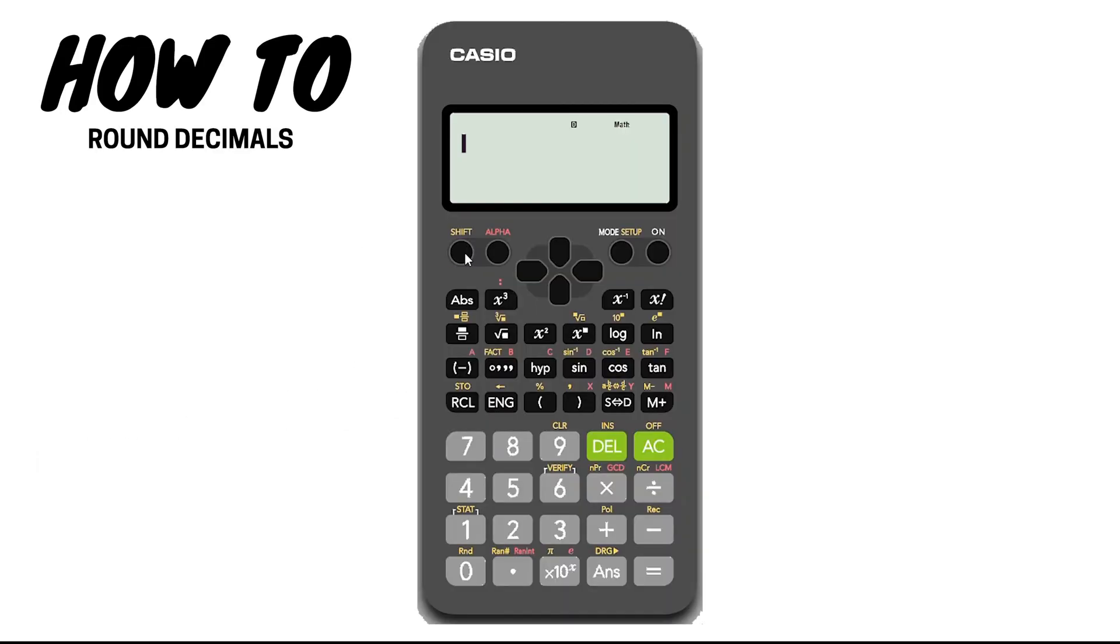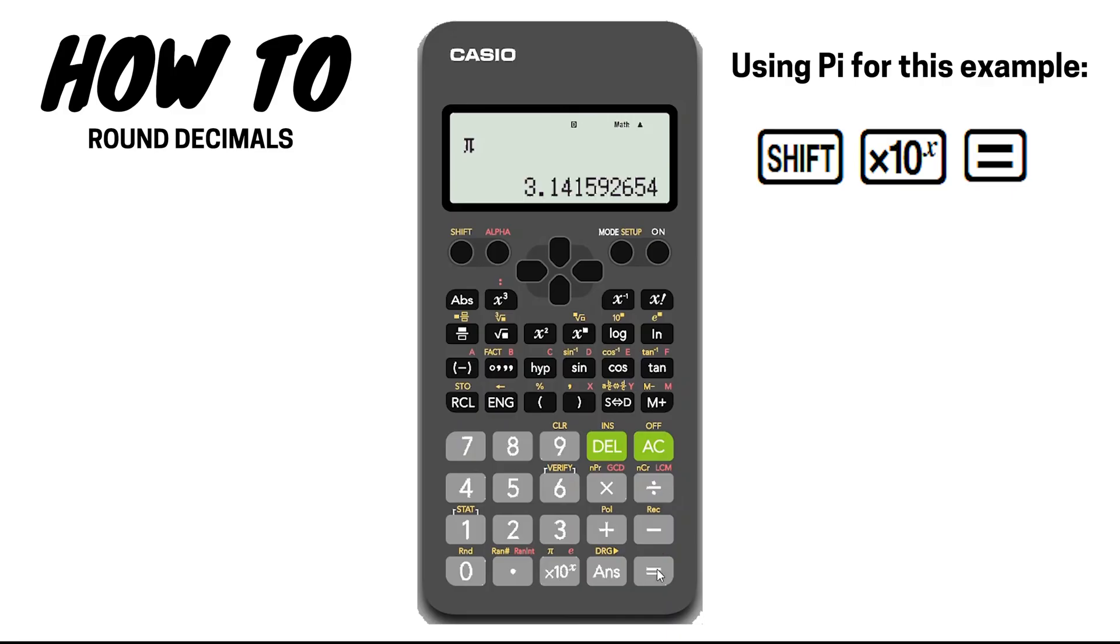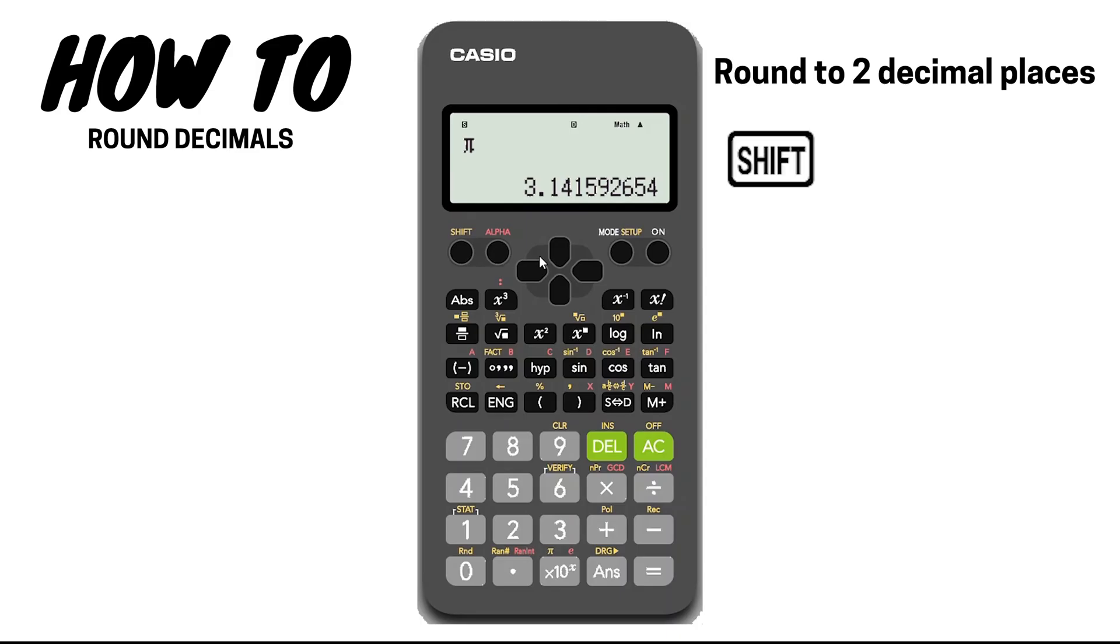Number seven: rounding a decimal. In this example I will be using pi and demonstrating how to round it to two decimal places. Press shift, then mode. Now we press number six, which is the fix option. You could now press any number between zero and nine depending on the number of decimal places you want to round to. In this example I'm going to press two.